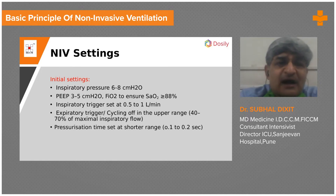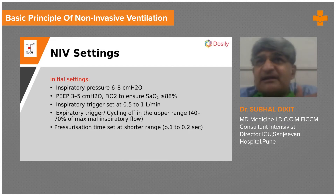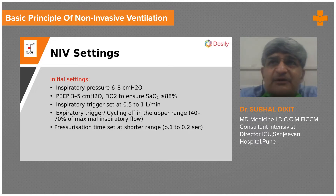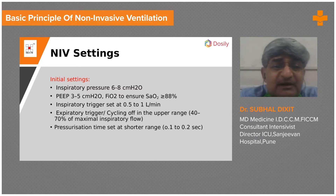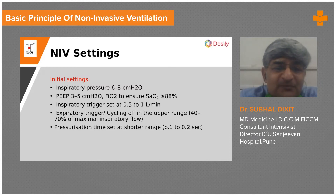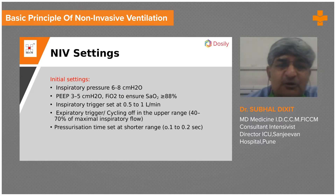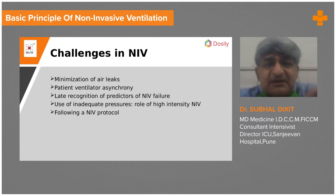For initiation, you start off with low pressure — an IPAP level of about 6 to 8 cmH2O — and gradually increase based on patient comfort, checking respiratory rate and oxygen saturation. EPAP is started at 4 to 5 cmH2O and increased depending on FiO2 requirements and oxygen saturation. The inspiratory trigger is usually set at 0.5 to 1 L/s, cycling between about 40 to 70 percent of maximum inspiratory flow, and the rise time (ramp time) is usually set at 0.1 to 0.2 seconds.